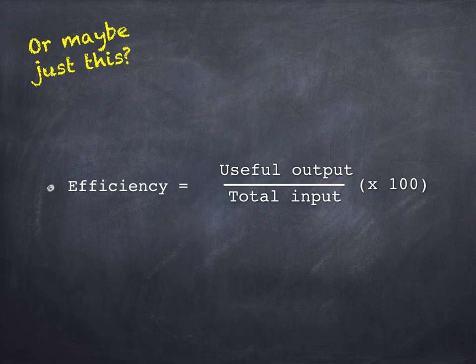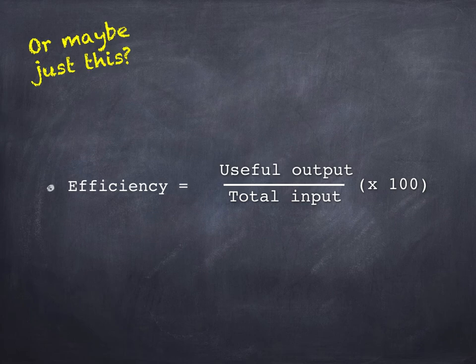Just make sure you get the two energies the right way around. There's an easy way to check this. Because some energy is always wasted, efficiency is always less than 1, or 100%. If you get an efficiency bigger than this, you're dividing by the wrong number.